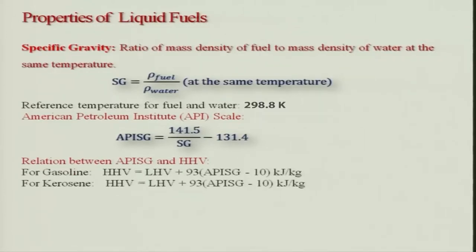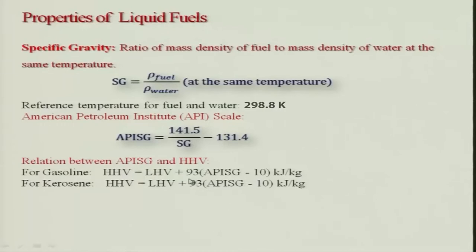They came up with a formula for gasoline: HHV = LHV + HHV + 93 × API Sg − 10, with units of kilojoules per kg. For kerosene they have a similar formula with the same constants, though these constants may change for various wells. These are all semi-empirical and you may or may not use them.